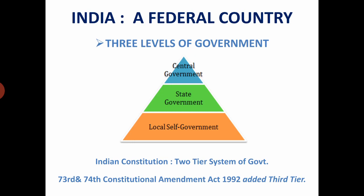As a federal state, India too has more than one level of government. We have three levels of government. The constitution originally provided for two tiers or levels of government. However, in 1992, by the 73rd and 74th amendment, the third tier was added, i.e. panchayats and municipalities.